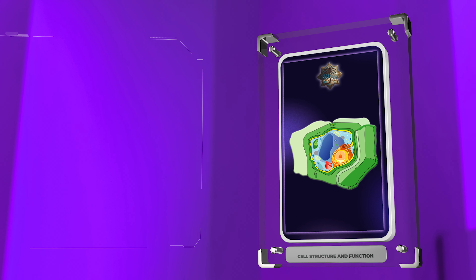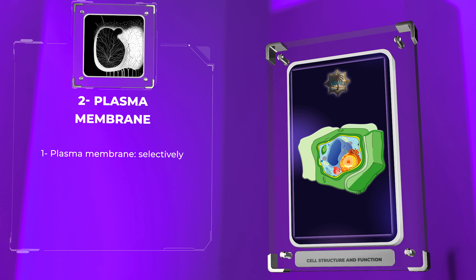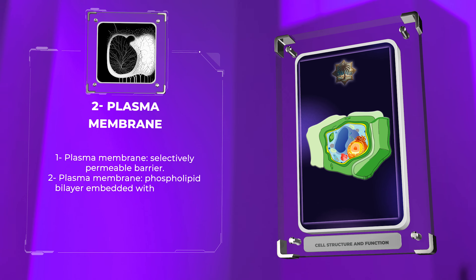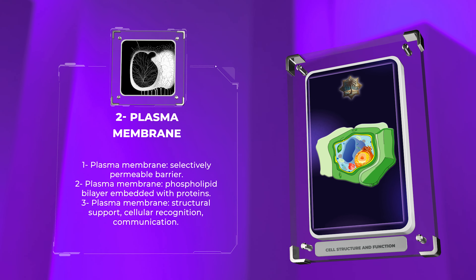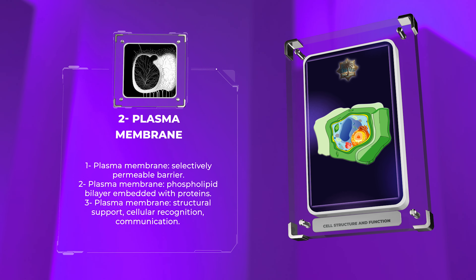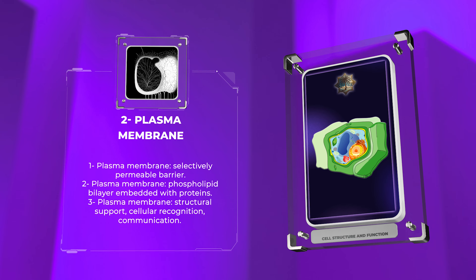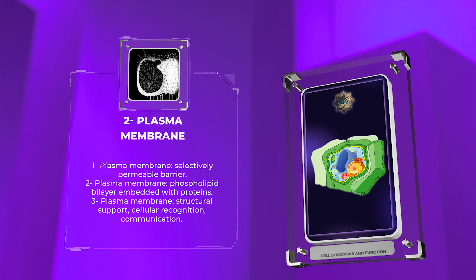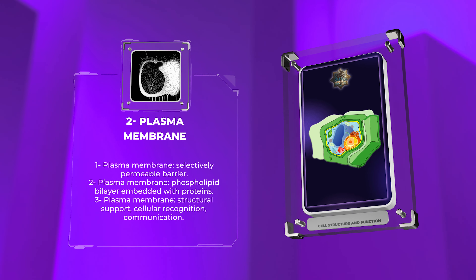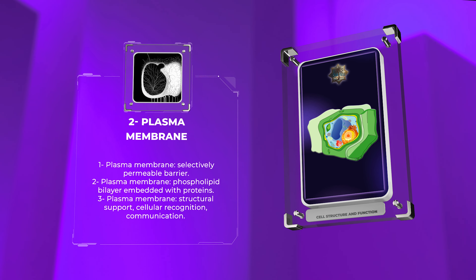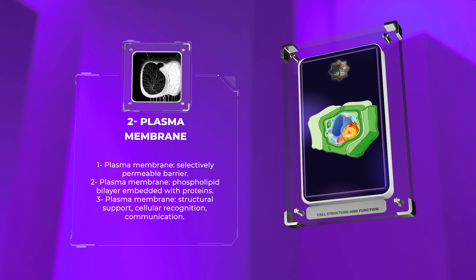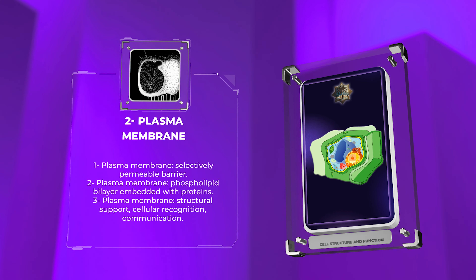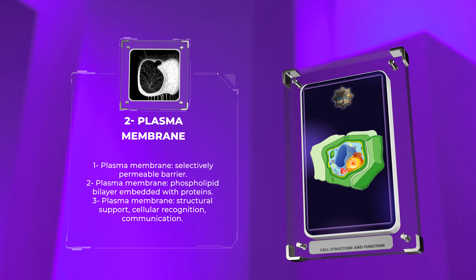The plasma membrane, a selectively permeable barrier, encloses the cell and regulates the passage of molecules into and out of the cell. Composed of a phospholipid bilayer embedded with proteins, this complex structure not only provides structural support but also participates in cellular recognition and communication processes.